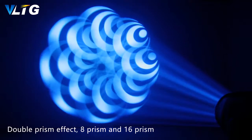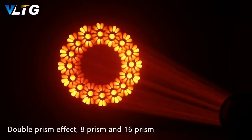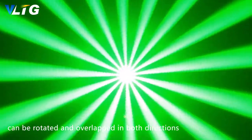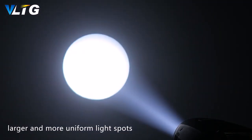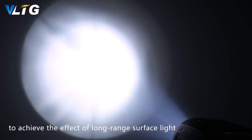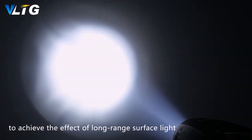Double prism effect, 8 prism and 16 prism, can be rotated and overlapped in both directions. Heavy atomization tablets are used to form larger and more uniform light spots to achieve the effect of long-range surface light.